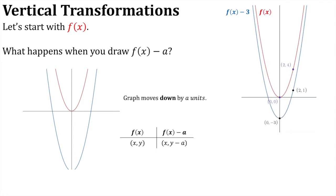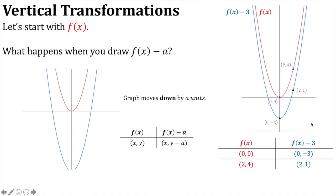Looking at a specialised example: on f of x we have the points (0, 0) and (2, 4). If we draw the graph of f of x minus 3, those points become (0, −3) — because we've taken 3 from the y-ordinate, so 0 minus 3 is negative 3 — and (2, 4) becomes (2, 1), because we've subtracted 3 from the y-ordinate.